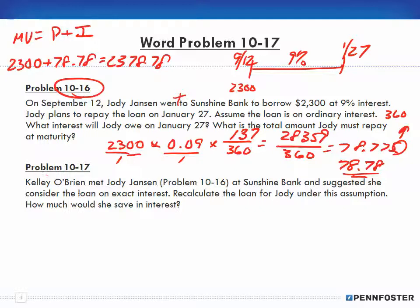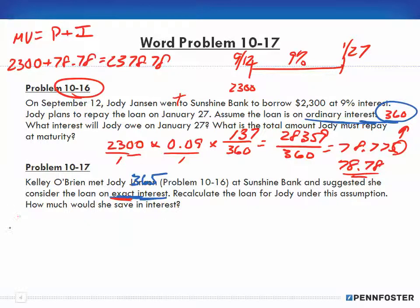Problem 10-17: Kelly O'Brien met Jody Jansen at Sunshine Bank and suggested considering the loan on exact interest instead of ordinary interest. With ordinary interest we used 360 days; with exact interest we use 365 days. The problem asks us to recalculate the loan under this assumption and determine how much Jody would save in interest. These two problems together give you a good idea of the difference.